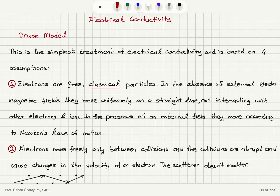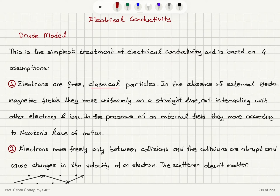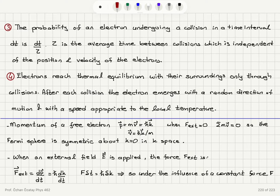Electrons move freely only between collisions, and the collisions are abrupt — they take no time. When a collision occurs, it causes changes in the velocity of the electron. Whether the collision is with an ion or another electron, it doesn't matter; the nature of the scatterer has no influence on the outcome.